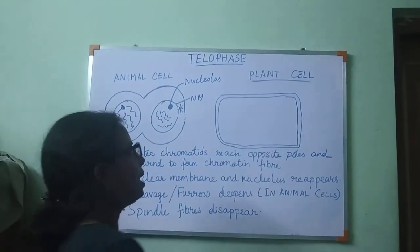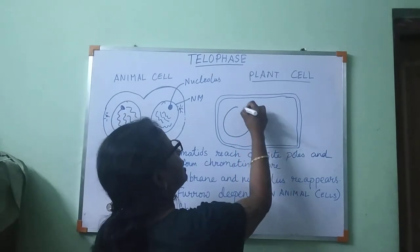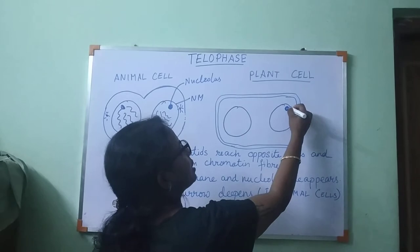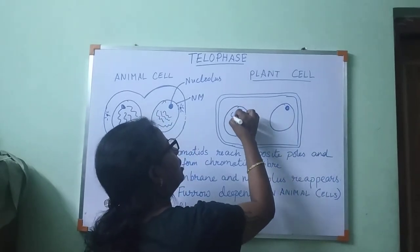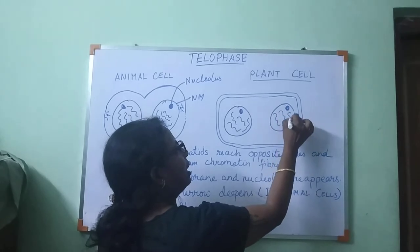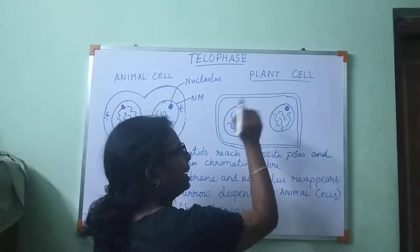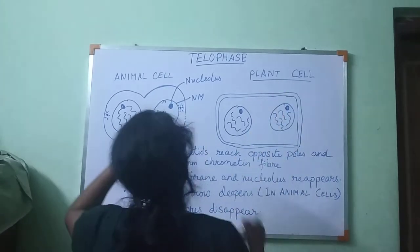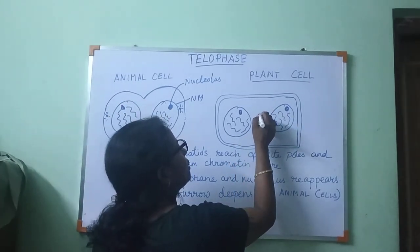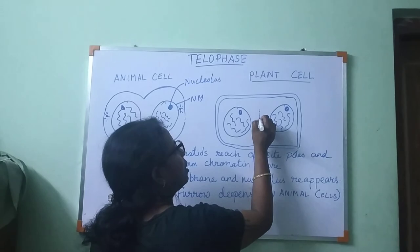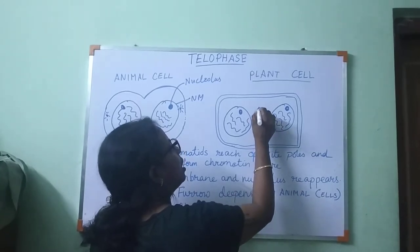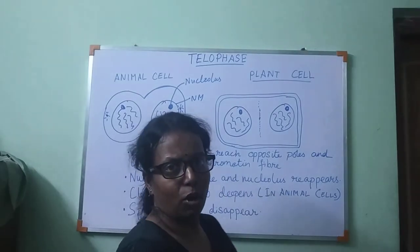In the plant cell, the nuclear membrane reappears, the nucleolus reappears, and the chromatin fibers unwind. Instead of furrow formation, there is a formation of a cell plate, which starts from the middle of the cytoplasm and extends towards the cell wall.